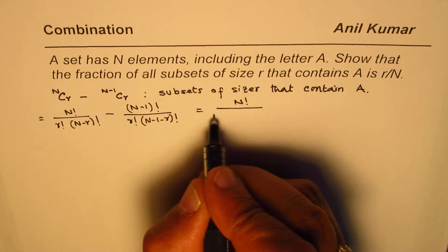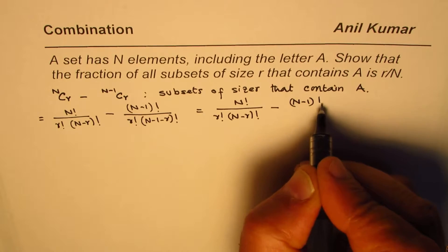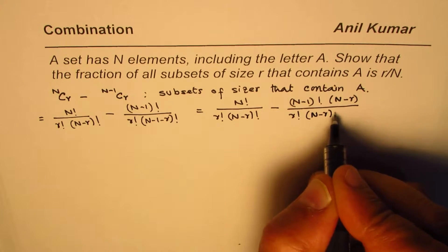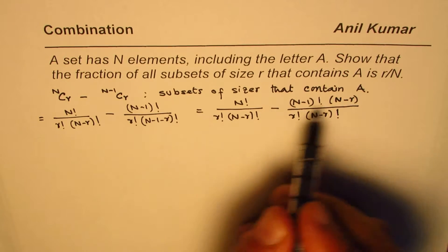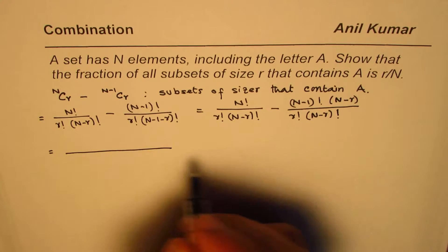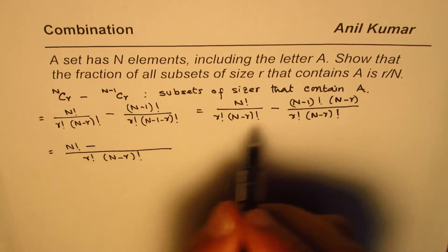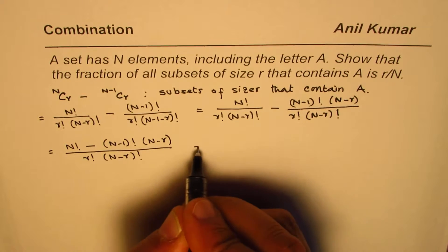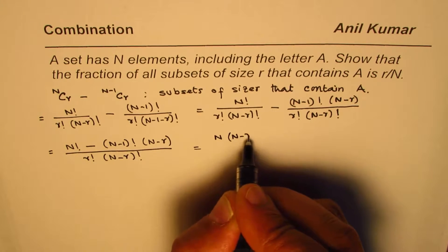So we get N factorial divided by R factorial (N minus R) factorial, minus (N-1) factorial times (N minus R) over R factorial times (N minus R) factorial. We can write (N minus R) factorial since we multiplied by (N minus R), so (N minus R) times (N minus R) factorial gives us that term. So we have a common denominator: R factorial times (N minus R) factorial. The numerator is N factorial minus (N-1) factorial times (N minus R). Now N factorial can be written as N times (N-1) factorial.